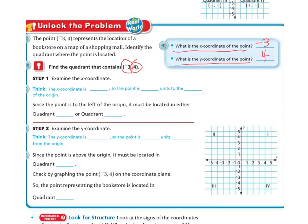Think: the x-coordinate is negative 3, so the point is 3 units to the left of the origin. Because remember, when we're doing negative, we're going this way, and there's my origin. Since the point is to the left of the origin, it must be located either in the second quadrant or the third quadrant.